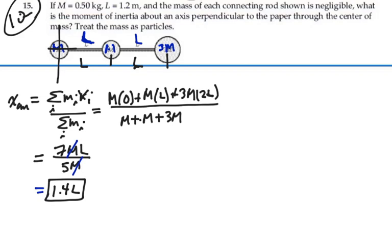Okay, so our center of mass is located right here at 1.4l. And we want to find the moment of inertia of this mass system around that point.